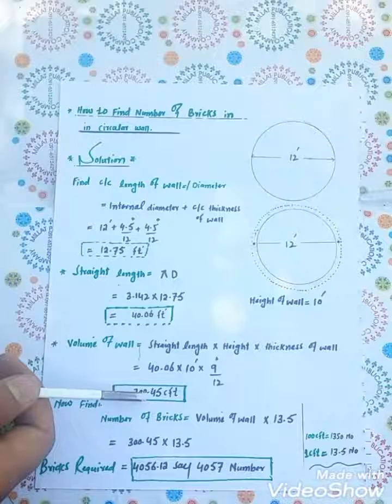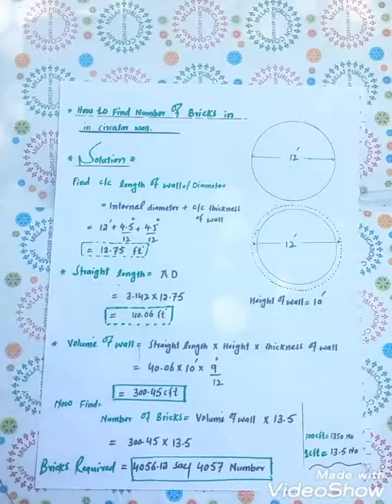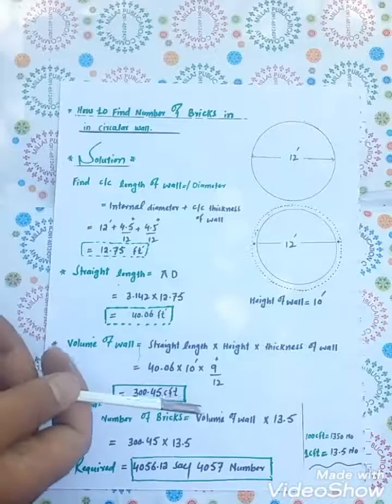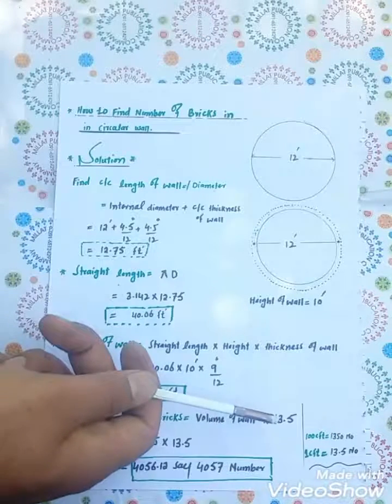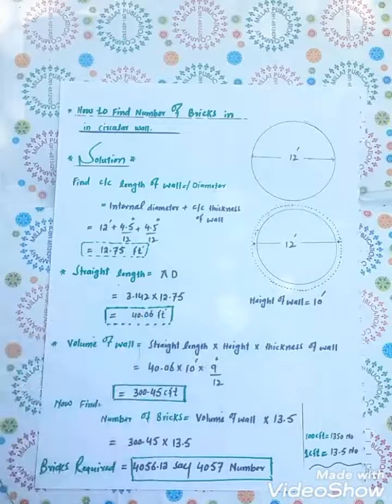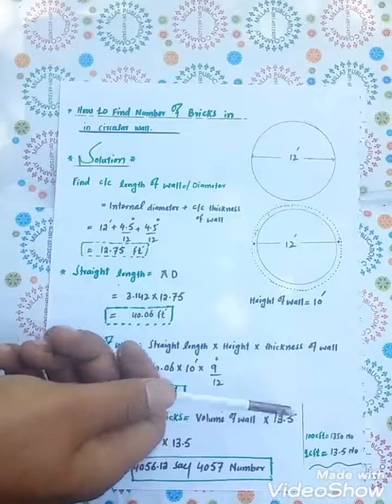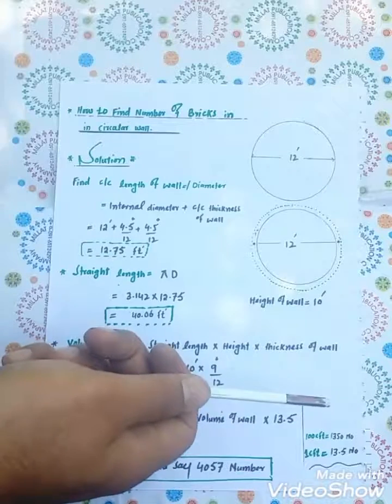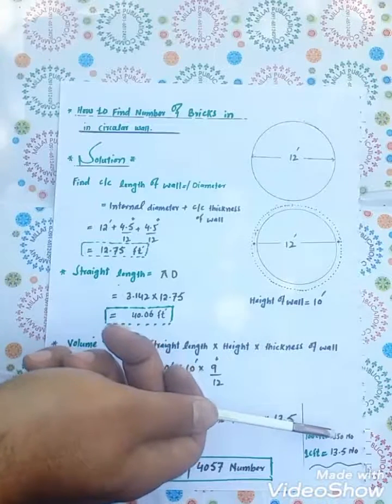Now find the number of bricks. Formula used: volume of wall multiplied by 13.5. What is 13.5? In one cubic foot of brickwork, 13.5 number of bricks are required.